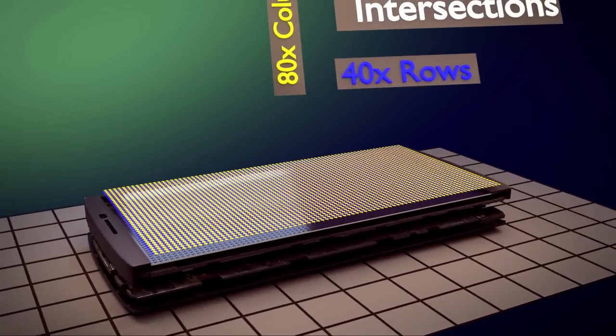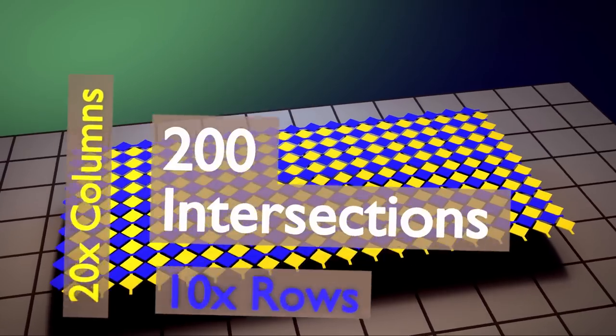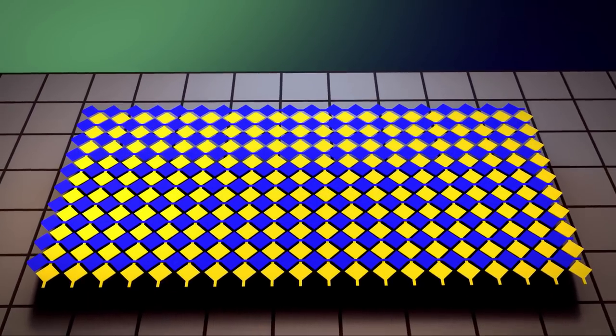Before we continue, let's simplify the grid from 3200 intersections down to 200 intersections. Everything conceptually works the same, it's just easier to visualize.